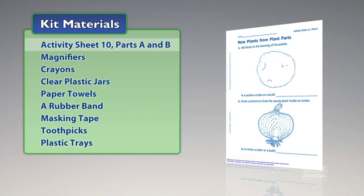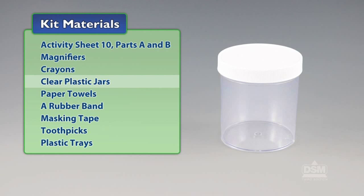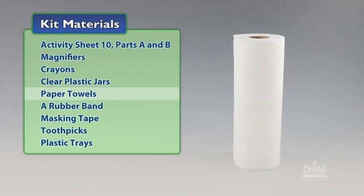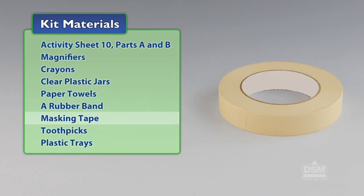You will need the following materials from the kit: Activity Sheet 10 Parts A and B, magnifiers, crayons, clear plastic jars, paper towels, a rubber band, masking tape, toothpicks, and plastic trays.